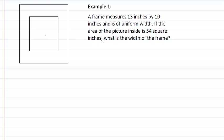In Example 1, we have that a frame measures 13 by 10 inches. So that means we have 13 by 10 and it is of uniform width. The area of the frame is 54. What is the width of the frame?